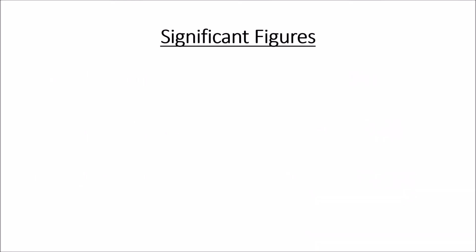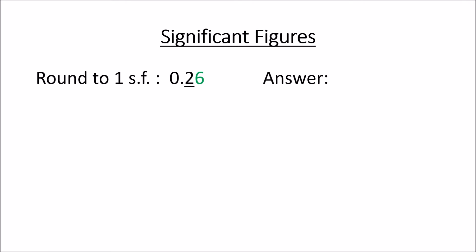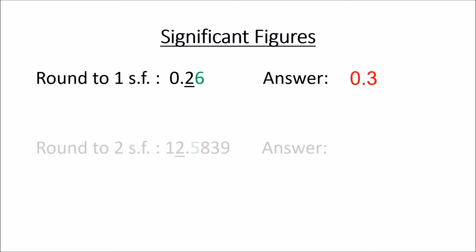Now, significant figures — don't get confused with these. Decimal places is easy to remember because it says decimal places. Significant figures — you're looking at the digits. Round to one significant figure: 0.26. Zero at the front is not significant, so you look at the 2. That's the first digit. So the answer is 0.3, because there's a 6 after the 2, so you add a 1 to the 2, making it 0.3.